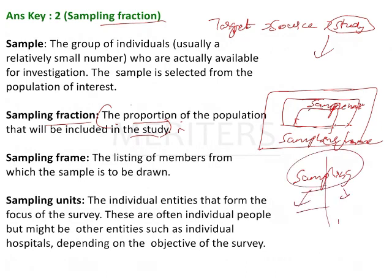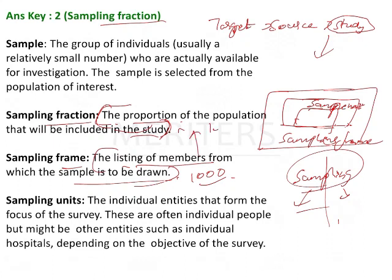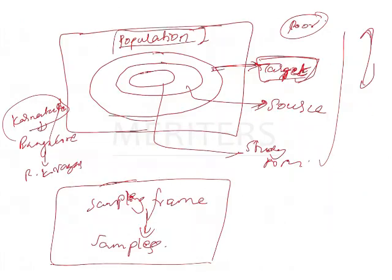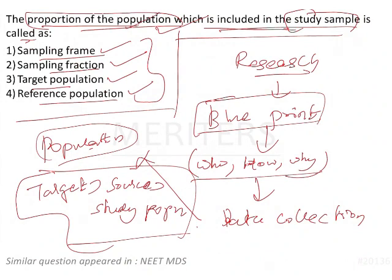For example, in the sampling frame there are around a thousand people. We have to calculate 10% of the people, so we select a hundred people. The proportional population included in the study is 10% of the population — this fraction is the sampling fraction. This is a simple direct pick question.